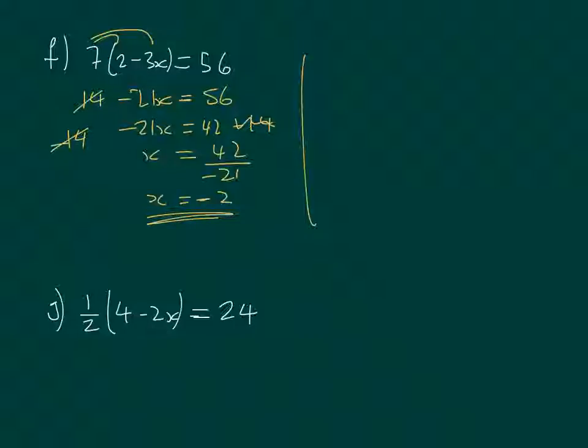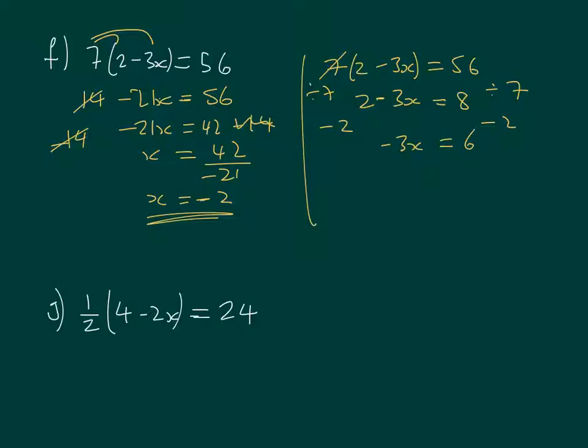But as I said, it might have been easier to not multiply through. So we had 7 multiplying 2 minus 3x, and that equals 56. If we just divide both sides by 7, that'll get rid of this 7 from here. And we'll have 56 over 7, which is 8. So 2 minus 3x equals 8. And then subtract 2. We'll have minus 3x equals 8 minus 2, which is 6. And then divide by minus 3, which will give us x. And we'll have 6 over minus 3, which is minus 2.